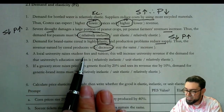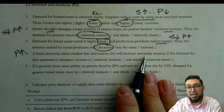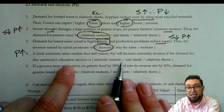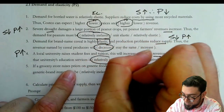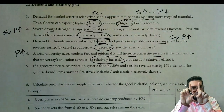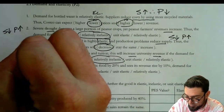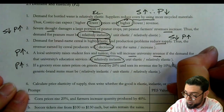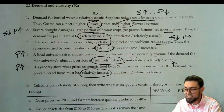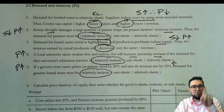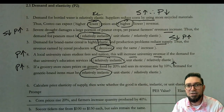Number four: a university raises fees and tuition. So I know right there prices are rising. And then it says it's going to increase the revenue — that would only be true if the demand is inelastic, right, so they're moving the same way. Number five: a grocery store raises prices on generic food, prices go up, and sees its revenue go up. If I know they're moving in the same direction, then I know that they must be relatively inelastic. So it's about remembering the relationship between price and total revenue, and the elastic and inelastic phenomenon.